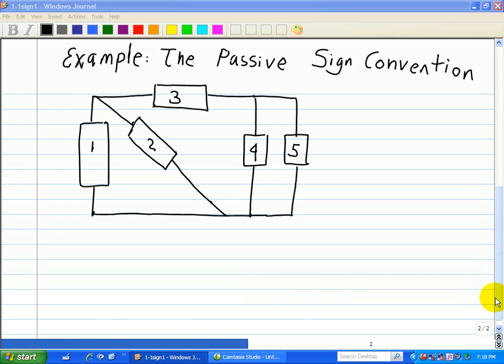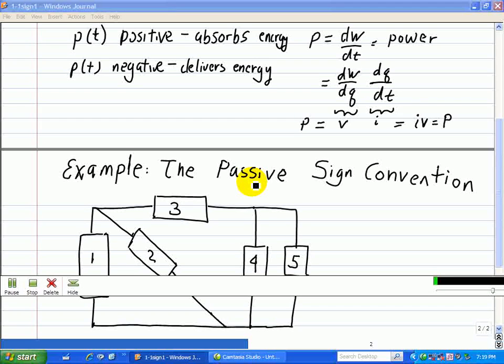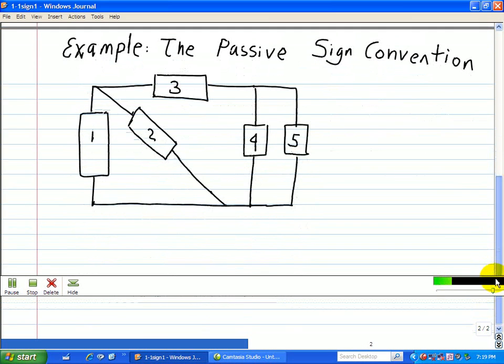Now let's go through an example illustrating how to use the passive sign convention. So we have here about five devices and what we want to do is assign some current direction as well as the polarities.